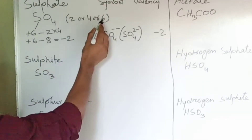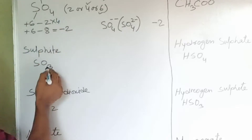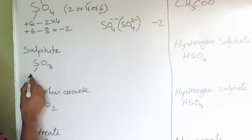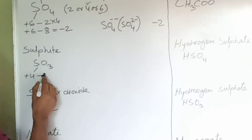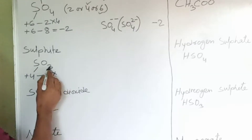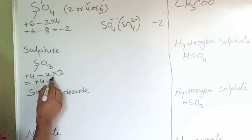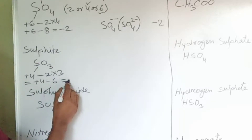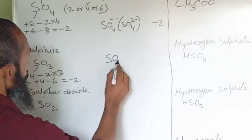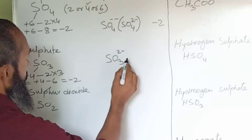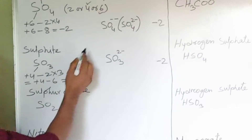Now here sulfite — same sulfur valency, either 2, 4, or 6. Here we are going to select 4 because there is one less oxygen than sulfate. Sulfur is electropositive, oxygen is electronegative with valency 2. Three atoms of oxygen are there, so plus 4 minus 6 gives valency minus 2. Its symbol is SO3 2-minus.